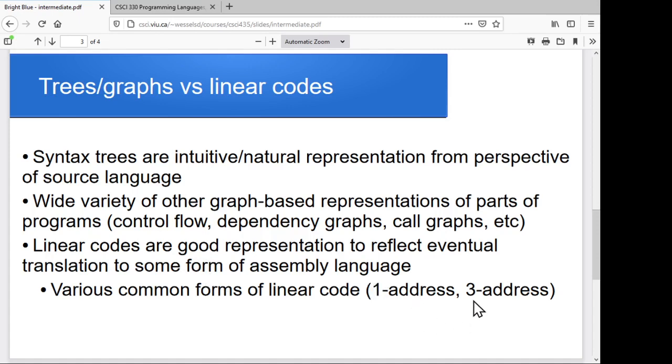We'll talk about one-address codes and three-address codes and see how they go. We'll just look at how these things can be used, how they can be implemented, and what some of the implications are.